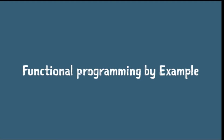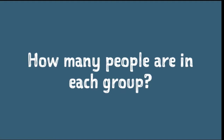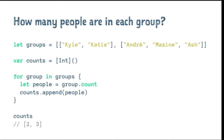Now let's look at some real-world examples of imperative code and how we can solve the same problem declaratively. My example is going to use an array of arrays of strings — basically an array of groups, where the first group has two people and the second group has three people. How would we approach determining how many people are in each group? Imperatively, we'd create a mutable array of integers called counts, iterate over each group, get the count of that, and append it to our array.